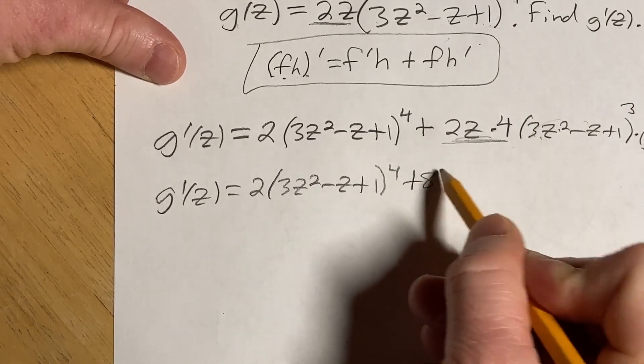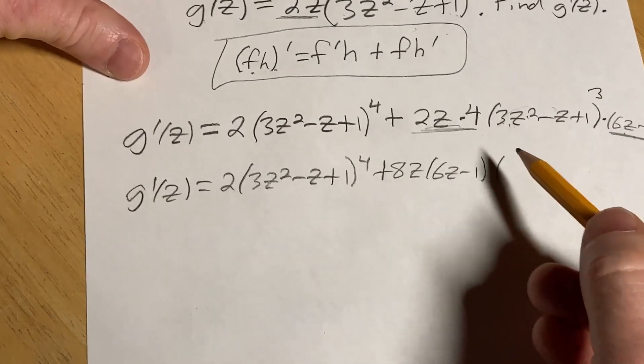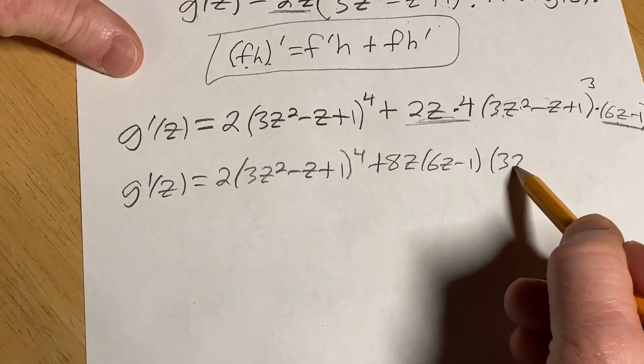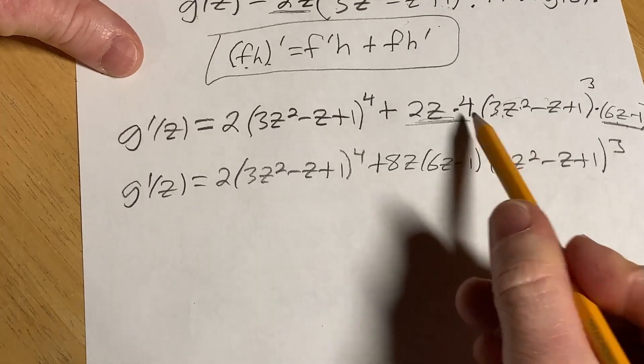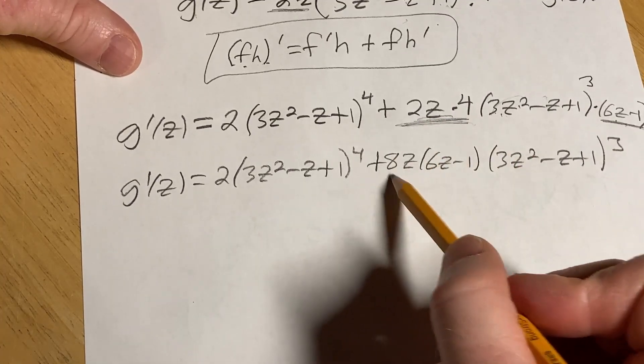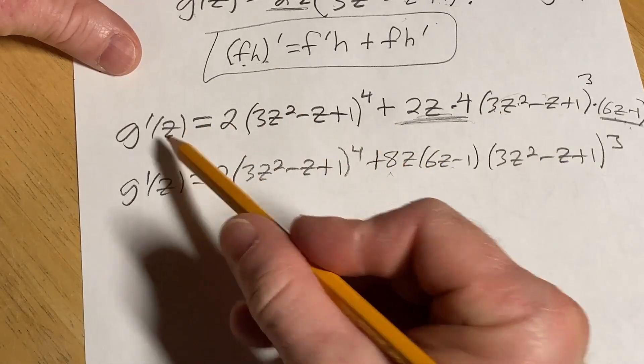So I'm going to write it like this, 8z, 6z minus 1. And then I'm going to write this down again, 3z squared minus z plus 1 cubed. So all we've done here is basically multiply the 2z and the 4. And I wrote this out front. That's the only thing I've done from going from here to here.